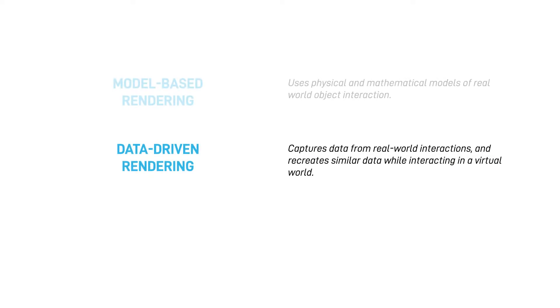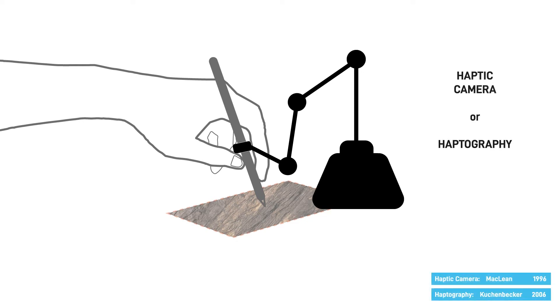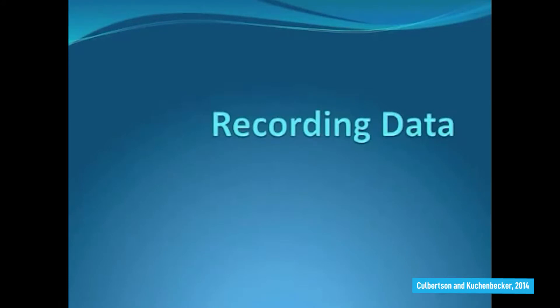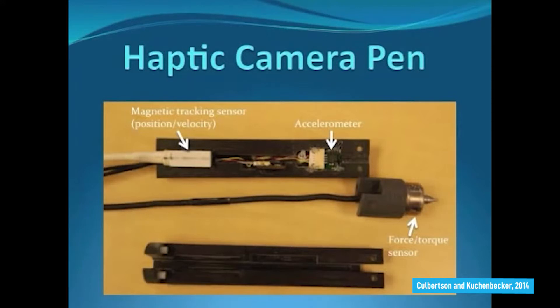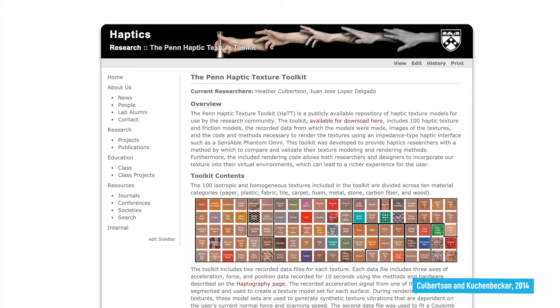Data-driven haptic rendering is a more recent approach that is growing in the haptics community. Here, researchers capture data from real-world interactions with objects and use that to render similar sensations in the virtual world. This approach is also known as haptic camera or haptography. A great example of data-driven rendering is the work of Culbertson and Kuchenbecker on simulating real-world textures on a tablet. In this example, a haptic pen was used to record data from real-world surfaces. The pen had a magnetic tracking sensor for capturing position and velocity of user motion, a three-axis accelerometer for recording vibrations from interacting with the surface, and a force sensor at the tip of the pen to record the amount of force that the user applied while dragging the tool over the surface. With this pen, they recorded data from free-form interactions with over 100 surfaces and created statistical models of the interactions.